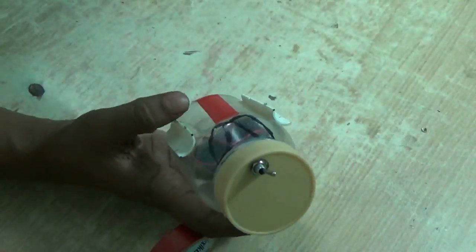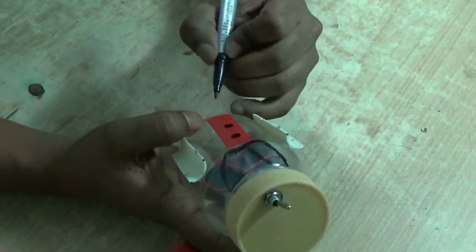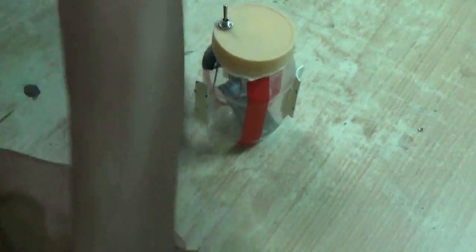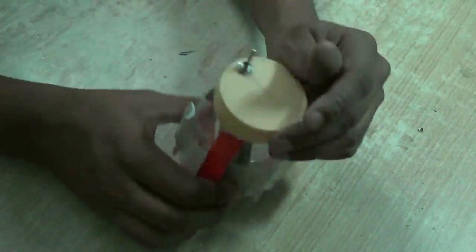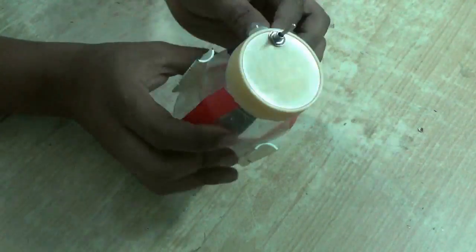Once done, decorate the robot with some tapes and some sketching. Put two eyes in front of it so that it looks like this.